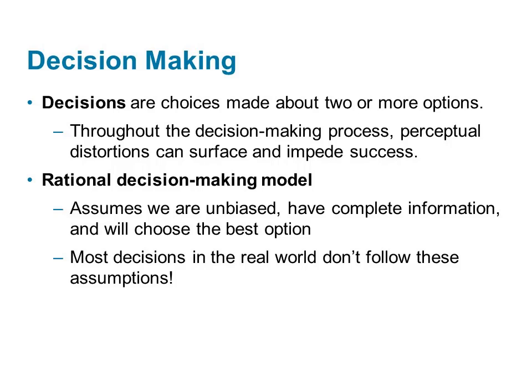Much like attributional errors, decision-making errors can occur below our awareness. The rational decision-making model has a few assumptions that do not represent how humans actually behave. This model assumes that people are unbiased, that they make decisions based on complete information, and that they choose the best option. None of these assumptions are supported by the research. People are biased, they rarely have all of the information that they need, and sometimes they choose the option that is most convenient, or cheapest, or meets some other subjective criteria.